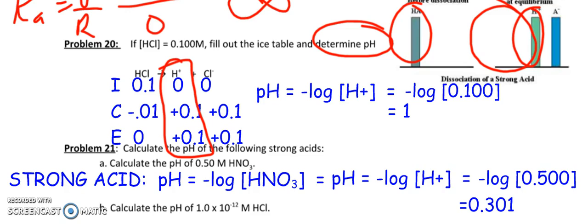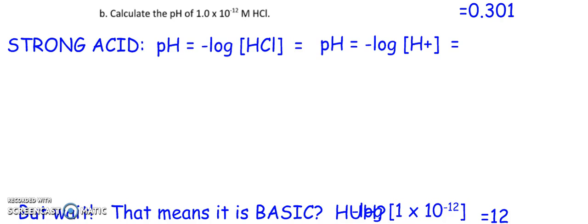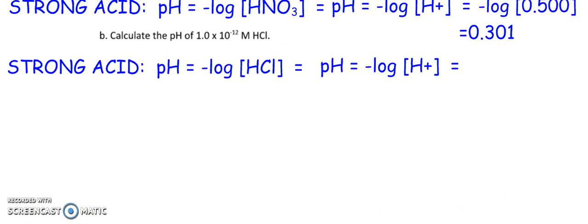So watch what happens when I calculate the pH of 1 times 10 to the negative 12 molar HCl. So I kind of start off with the same thing again. And here's the same thing. pH is negative log of HCl. And I plug in these values, right? So I have the negative log of 1 times 10 to the negative 12. And that is equal to 12, isn't it?